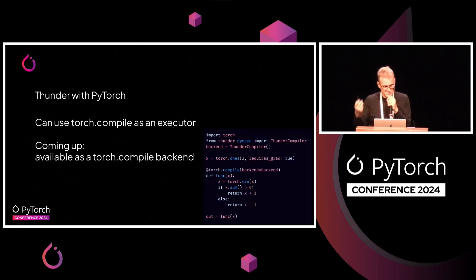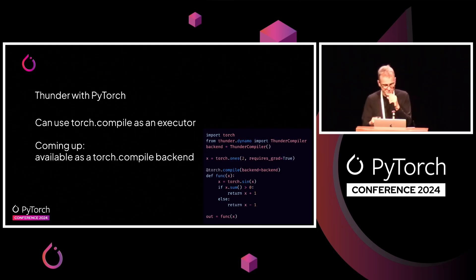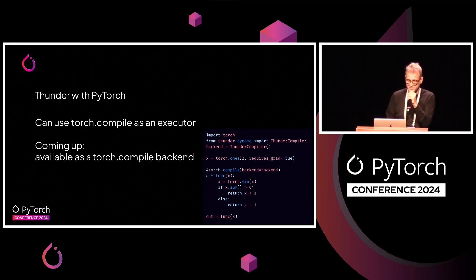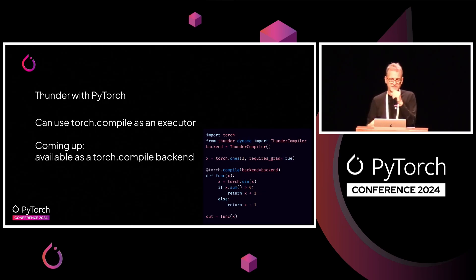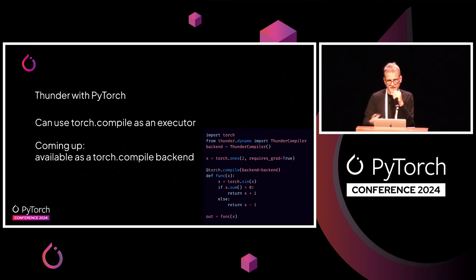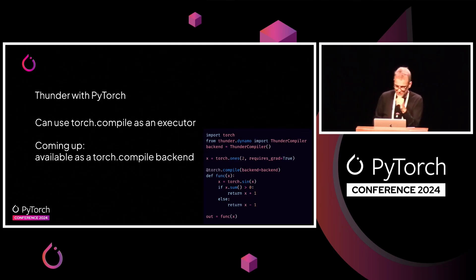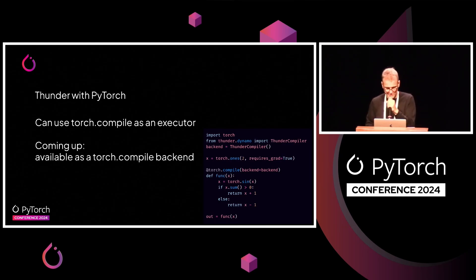The integration with PyTorch goes further because, as we saw, you can use TorchCompile as an executor. But also in the works is that you will be able to use Thunder as a TorchCompile backend. So you will let Dynamo acquire your computation and then have it expressed as a Thunder trace for you to manipulate. And this is an example of how it will work — it's landing right now.